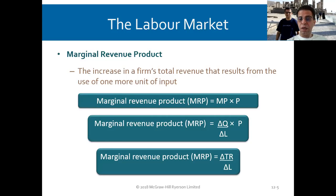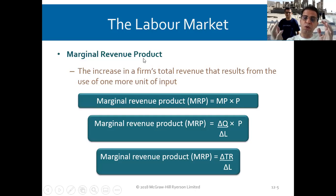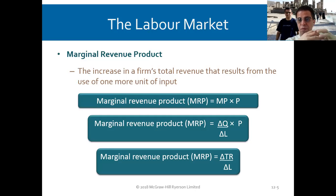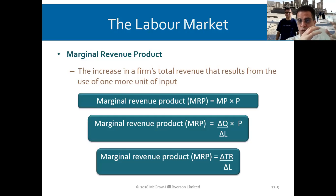In the labor market, we have what you call the marginal revenue product. Now we're going to reverse it — there are firms needing laborers to produce, so the laborers are the suppliers. The labor market is the suppliers; here the firms are the consumers. We need to just adjust that mentally.